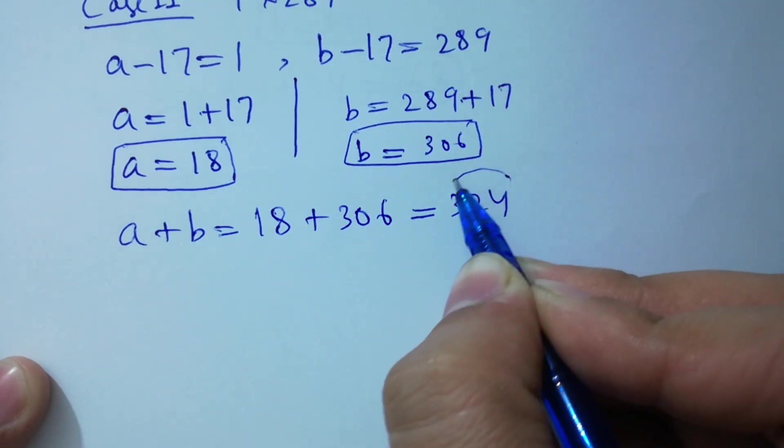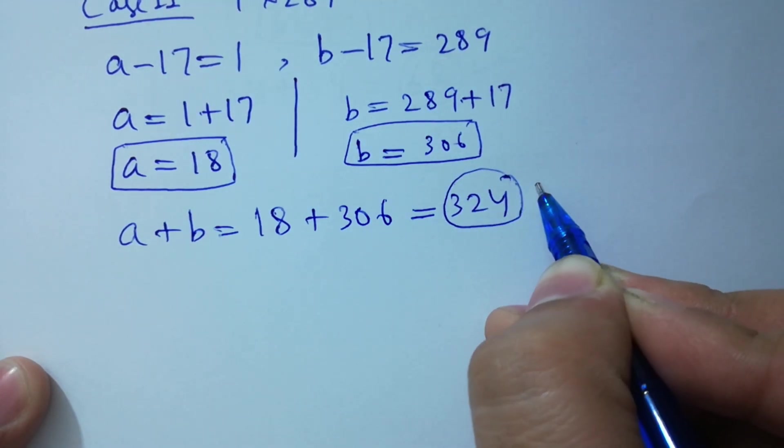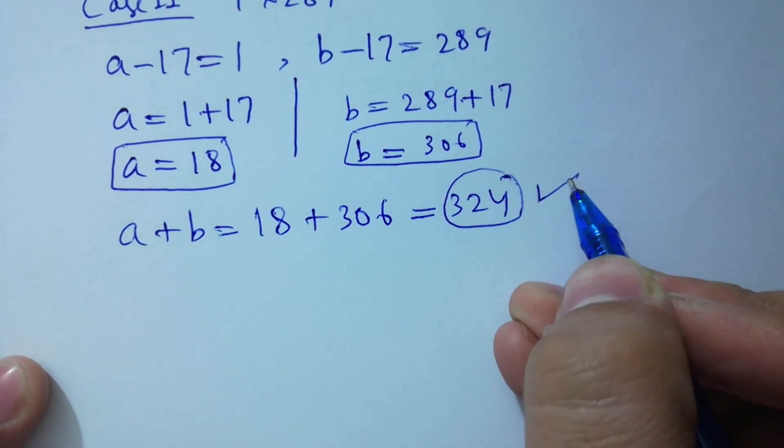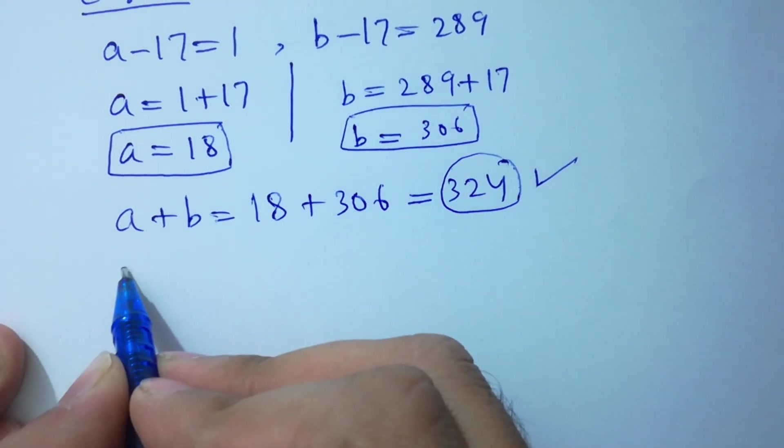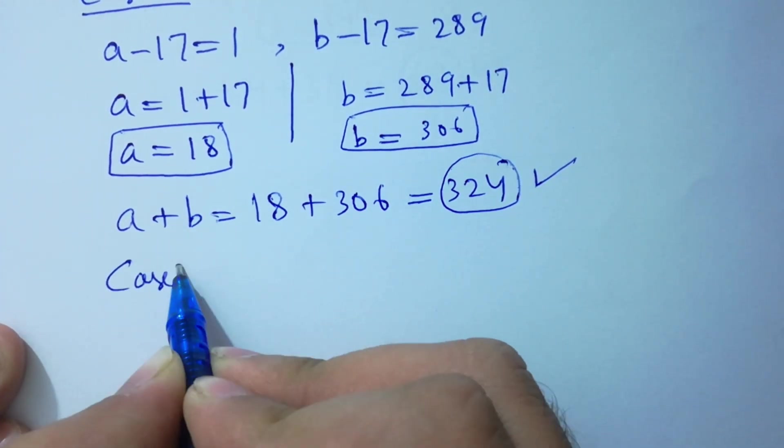So a plus b equals 18 plus 306, which gives us 324.